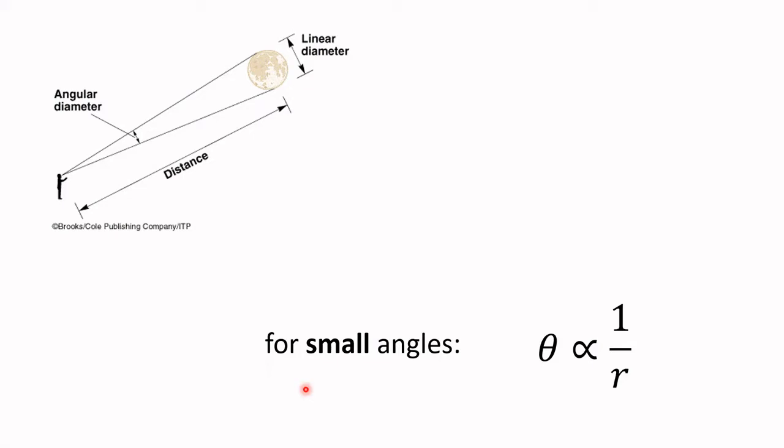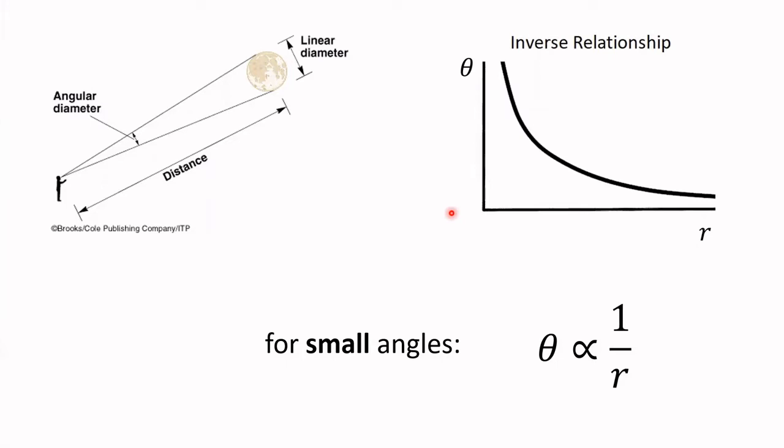So I want to emphasize that the inverse proportionality of the angular size theta and the distance to the object R, that proportionality really only holds for small angles. Now, there is an exact function or formula that you could use. It's called the tangent function. We're not going to mess with that right now. But it's really not that difficult to come up with an exact relationship. This works just fine for small angles.